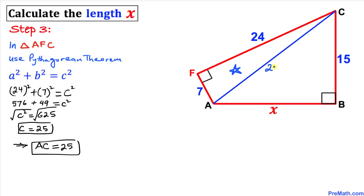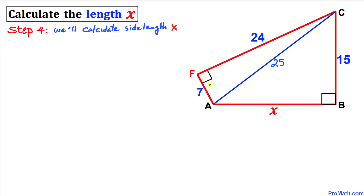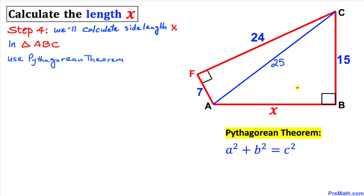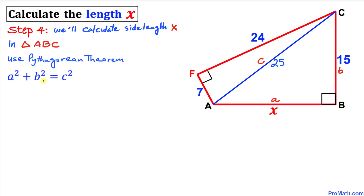The hypotenuse of triangle AFC turns out to be 25. One more thing — triangle ABC also shares the same hypotenuse, so triangle ABC also has a hypotenuse of 25. Here's our final step: we will calculate the unknown side length X by focusing on triangle ABC. We know this is a right triangle, so we are going to use the Pythagorean theorem again: A squared plus B squared equals C squared. The longest leg AC is our side C, the horizontal side I'll call A, and the vertical side I'll call B.